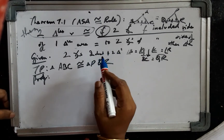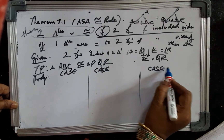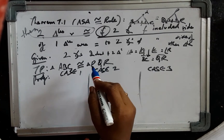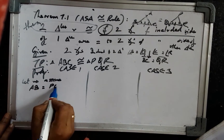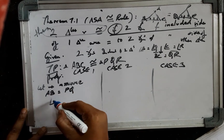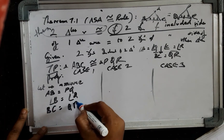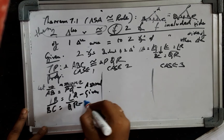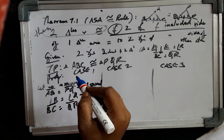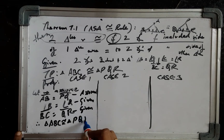This appears to be a simple proof, but there are three possibilities — case 1, case 2, and case 3. For case 1, let us assume AB equals PQ. With angle B equals angle Q and BC equals QR, where this is assumed, this is given, and this is also given — therefore, triangle ABC is congruent to triangle PQR by SAS congruence criterion.